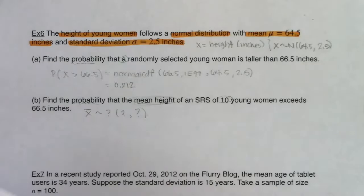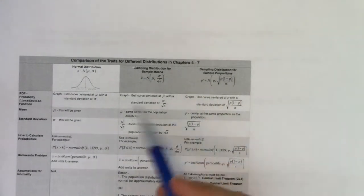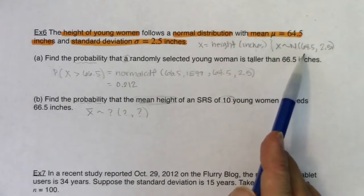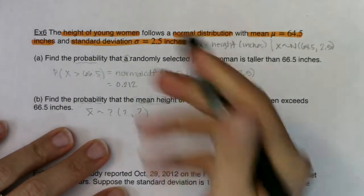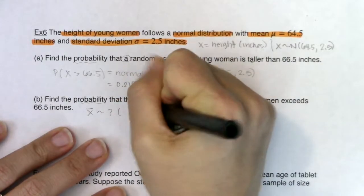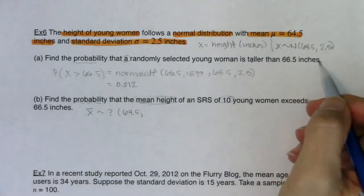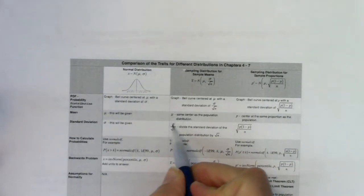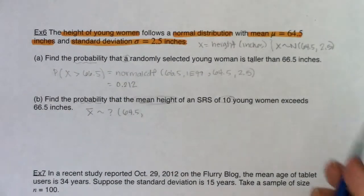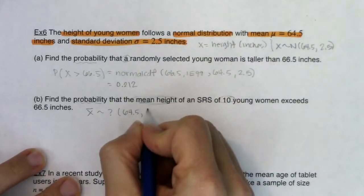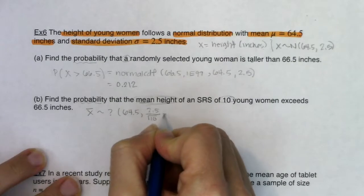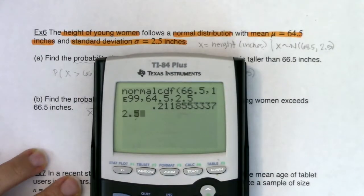Let me fill in the three key values for the sampling distribution. The mean of x-bar equals the population mean, which is 64.5 — the center is the same. For the standard deviation (standard error), I take the population standard deviation of 2.5 and divide by the square root of the sample size: 2.5 divided by √10, which gives approximately 0.791.